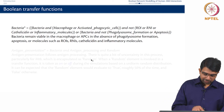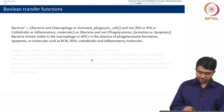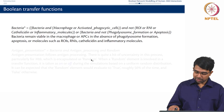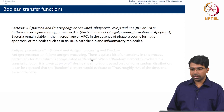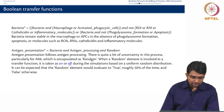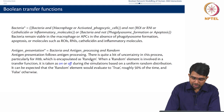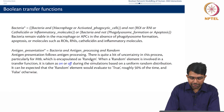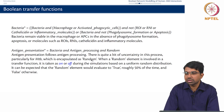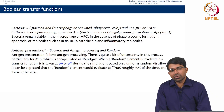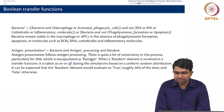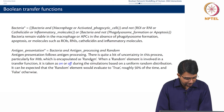So bacteria remain viable in macrophages or antigen-presenting activated phagocytic cells in the absence of phagolysosome formation, apoptosis, or molecules such as ROIs, RNIs, cathelicidin, and other inflammatory molecules. Antigen presentation follows antigen processing, and there is a bit of uncertainty in this process encapsulated as a random variable — true or false 50% of the time. If you knew a specific probability, you could encode it too. This demonstrates the strength of a discrete modelling framework: you can easily integrate whatever function you want.